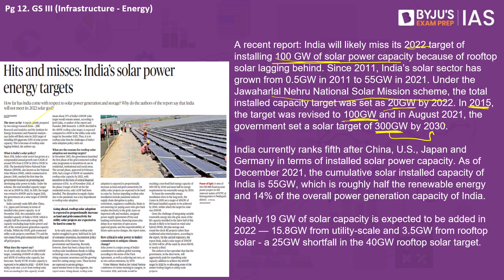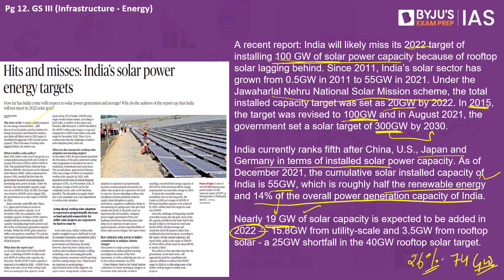India ranks fifth in the world — after China, US, Japan, and Germany — in total installed solar capacity. As of December 2021, India's total solar power installed capacity is about 55 gigawatts, about half of total renewable energy capacity and 14% of the country's overall power generation. The report expects India might add 19 more gigawatts in one year, bringing the total to about 74 gigawatts — still about 26% short of the 100 GW target by 2022.